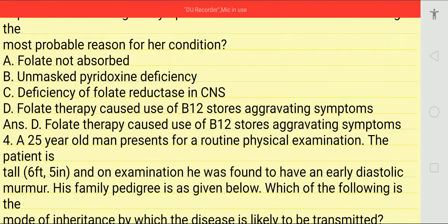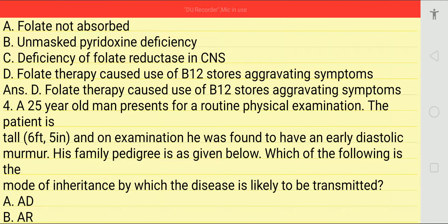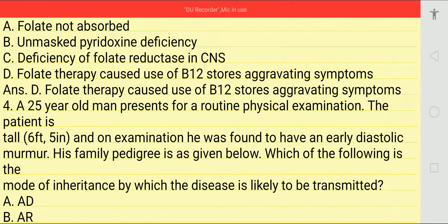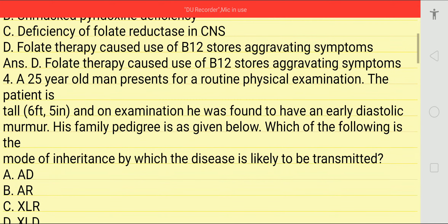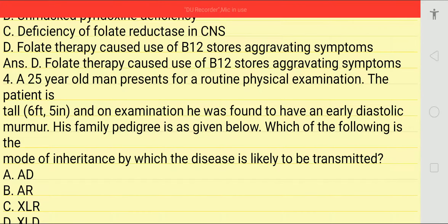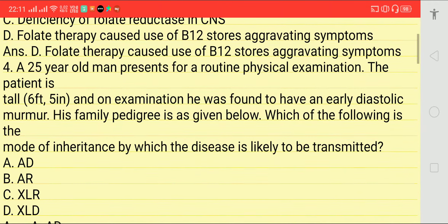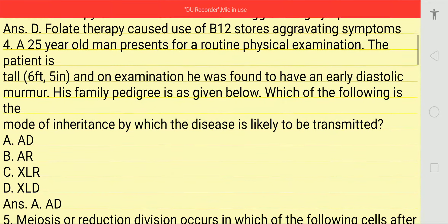Which of the following is the most probable reason for her condition? Options: folate not resolved, B12 deficiency, deficiency of folate reductase in CNS, or folate therapy causing use of B12 stores aggravating symptoms. Answer is D — folate therapy caused use of B12 stores, aggravating neurological symptoms.